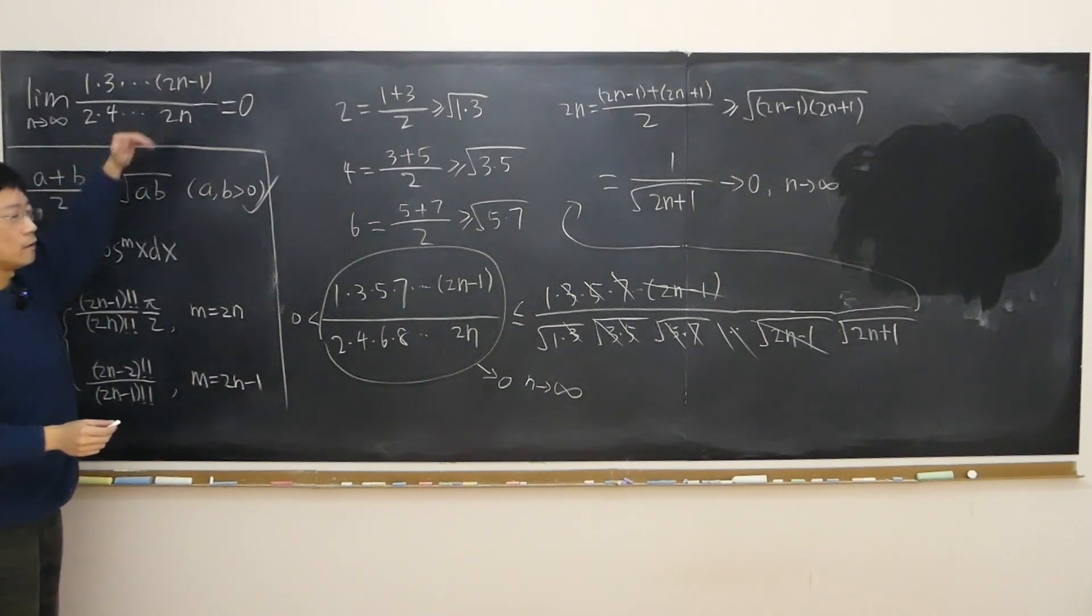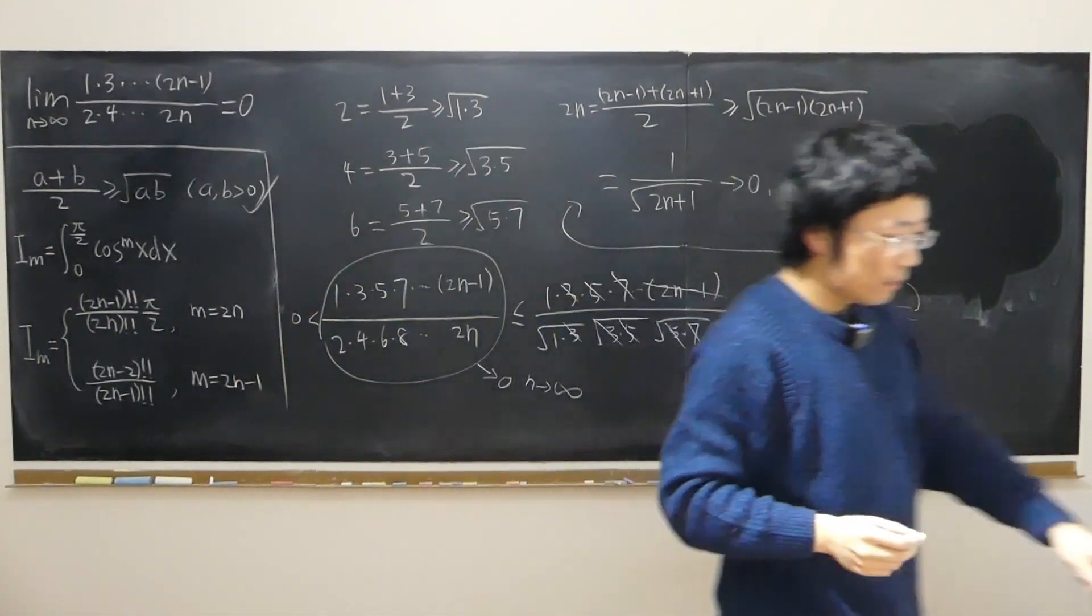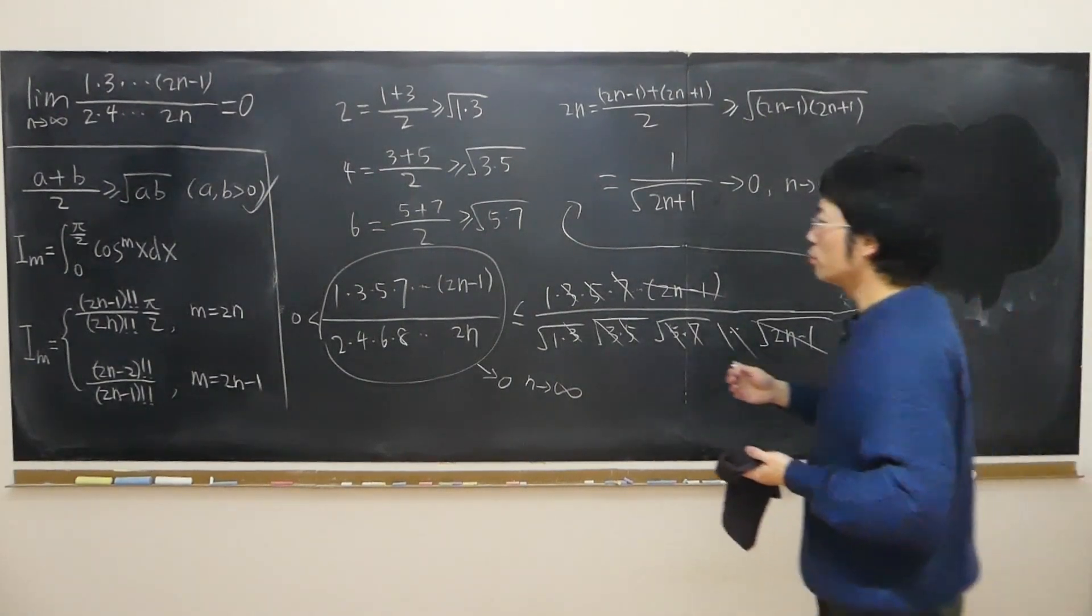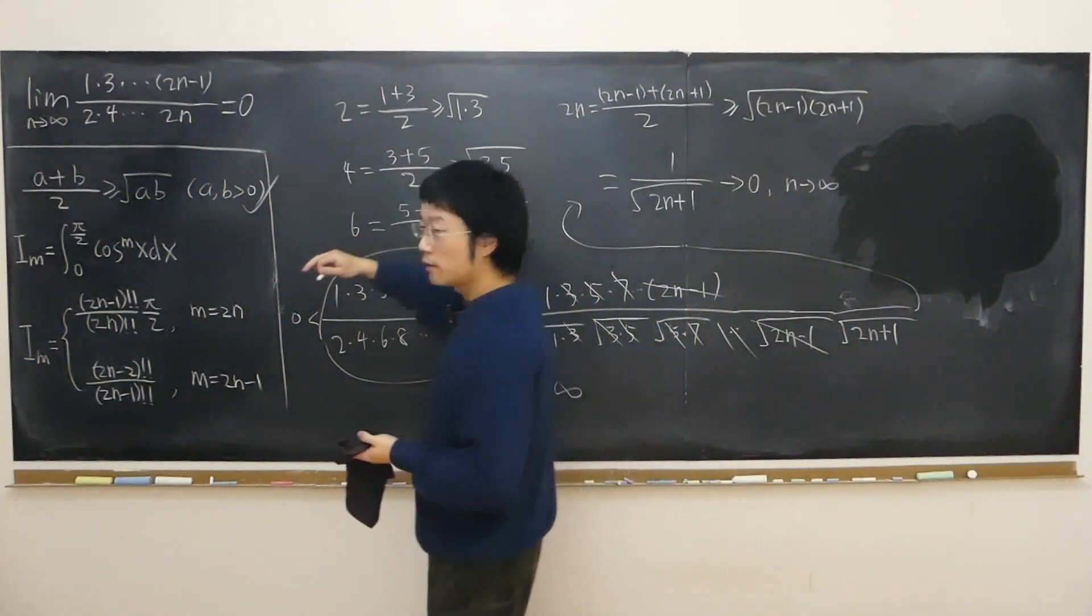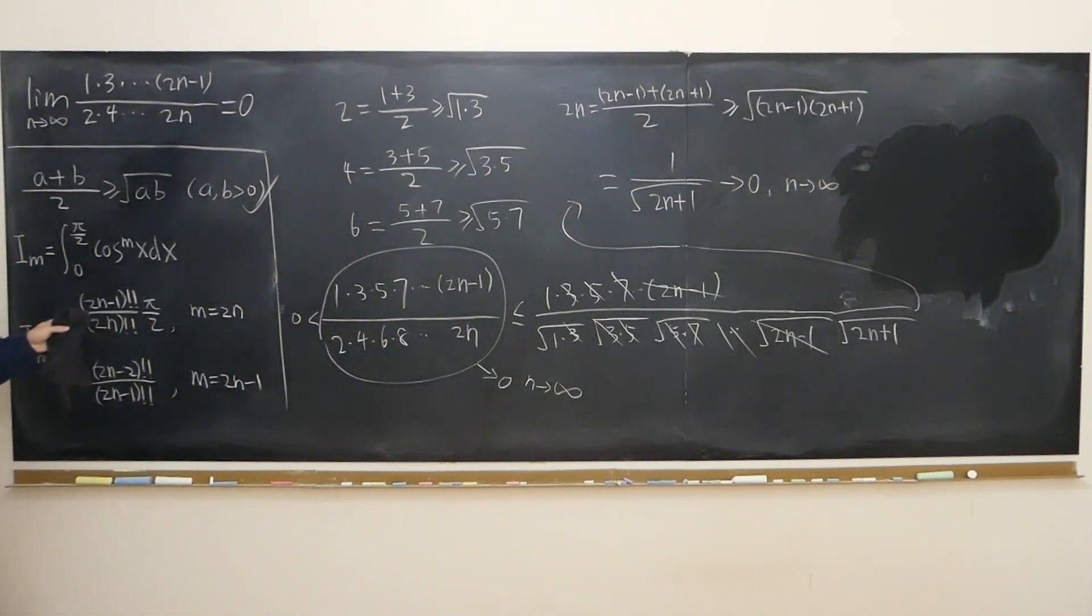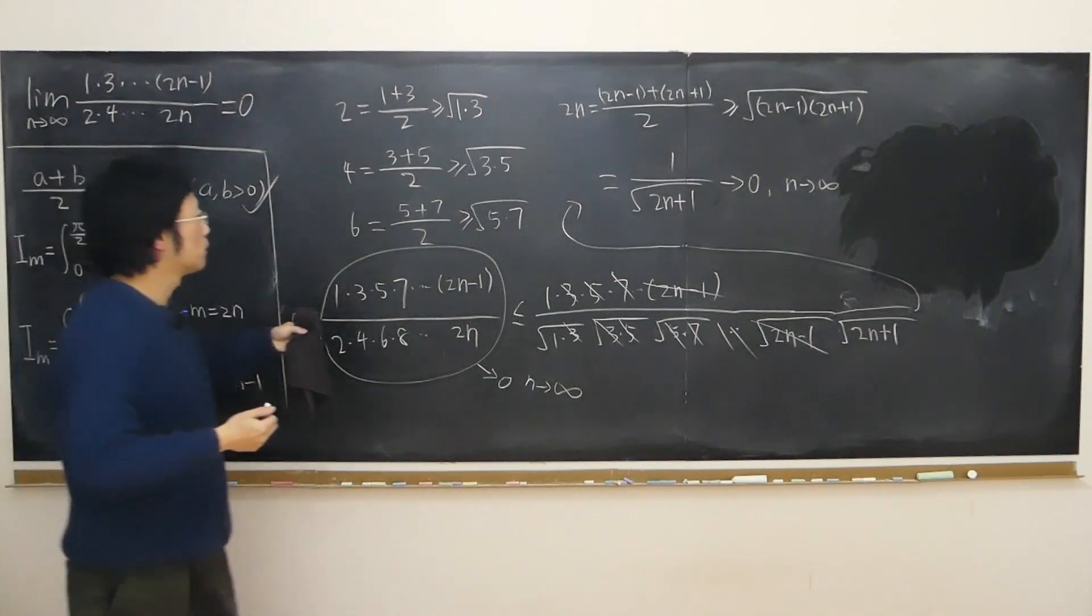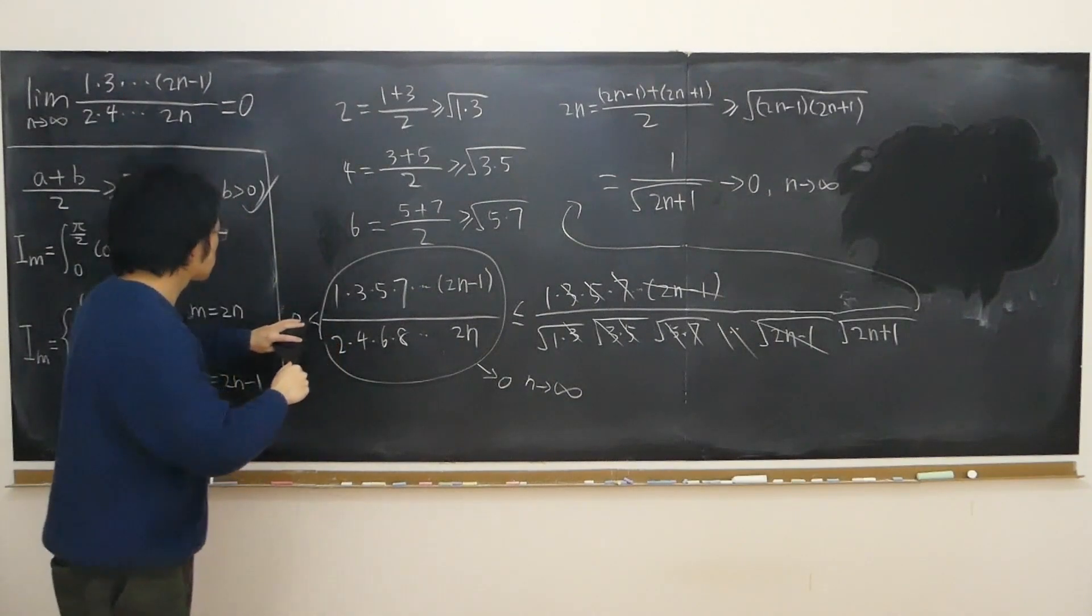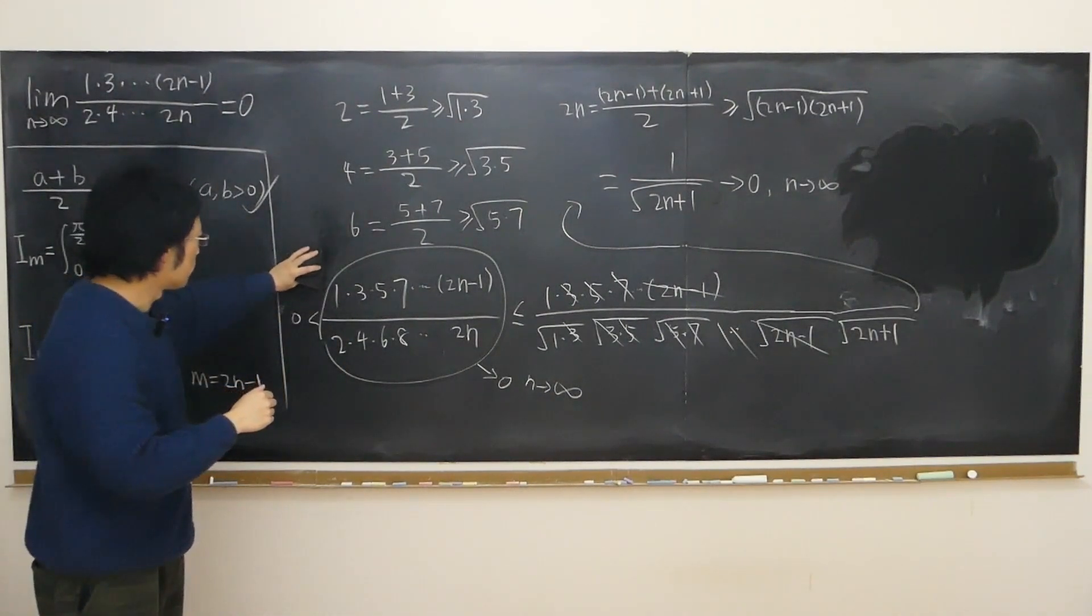Okay, so like I said I've proven the same result in a previous video of mine using epsilon-n definition by splitting the integral into two parts and using epsilon-n definition. So this is just a different way, a more elementary method, just using the AM-GM inequality.